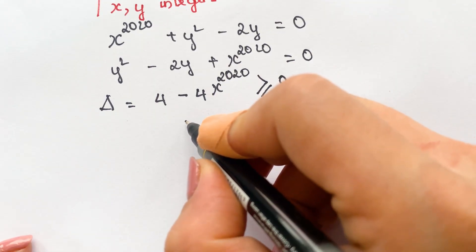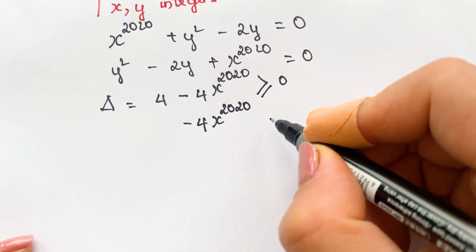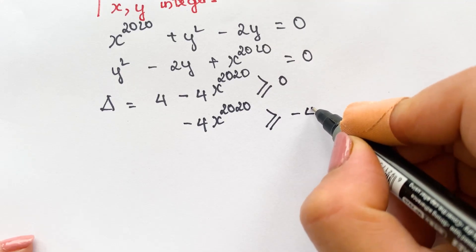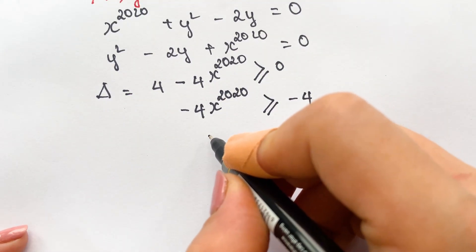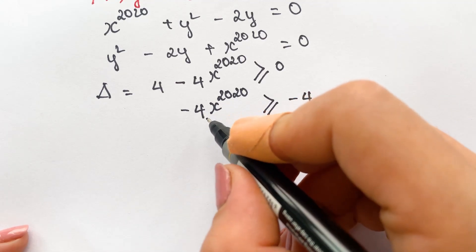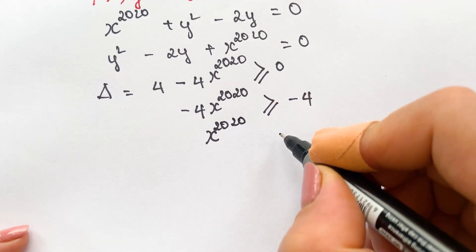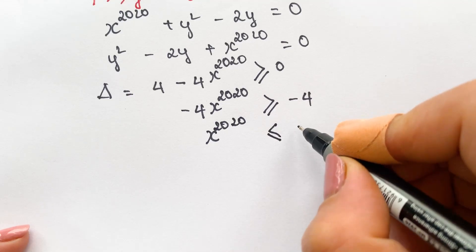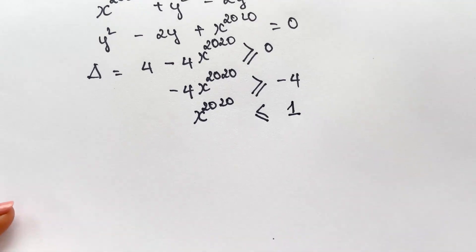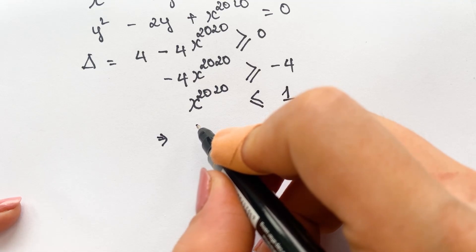So you can have minus 4x^2020 greater than or equal to minus 4. Then we divide both sides by minus 4, therefore x^2020 is smaller than or equal to 1. For the exponential smaller than 1, we have only three cases.